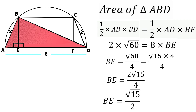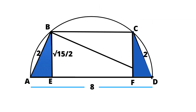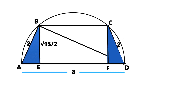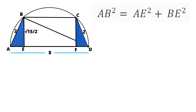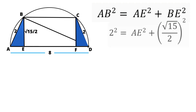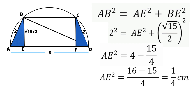Now we have the length of BE. Let's calculate AE. In right angled triangle AEB, by Pythagoras theorem: AB² = AE² + BE², so 2² = AE² + (√15/2)². Therefore, AE² = 4 − 15/4 = (16 − 15)/4 = 1/4, and AE = 1/2 cm.